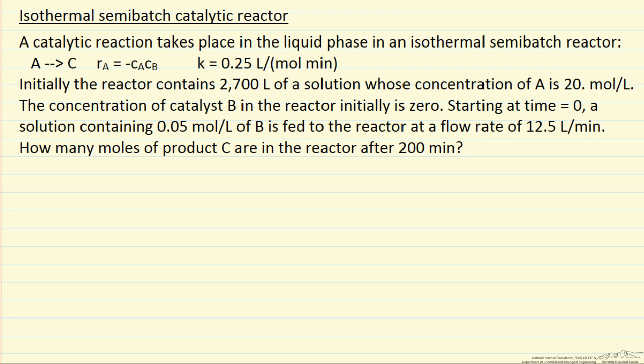The catalyst is component B. Initially the reactor starts out with 2700 liters of a solution that contains our reactant A, and then we add catalyst B continuously. We start out with no catalyst in the reactor, and then we start adding at a constant rate.